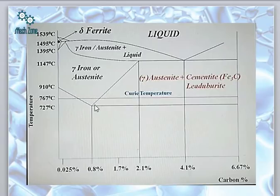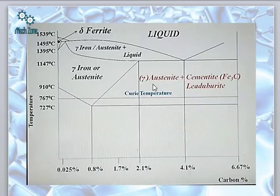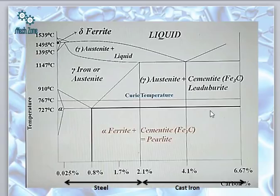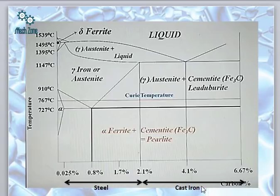The region between 2.1 percent and 4.1 percent carbon above the Curie temperature consists of two phases: gamma austenite and cementite (Fe₃C), also called ledeburite. The region between the two lower lines is alpha ferrite plus cementite, and this combination is called pearlite. When carbon percentage is up to 2.1 percent added to iron, the resultant product is called steel. If more than 2.1 percent up to 6.67 percent carbon is added, we obtain cast iron.